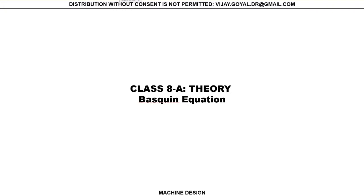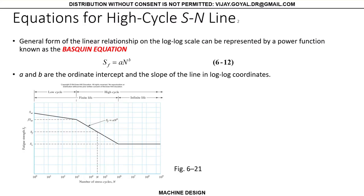Let's talk about the Basking equation in this lecture. The Basking equation relates your fatigue strength to your number of life cycles. It's basically S equals a times N to the b. That's the most general form of this equation.